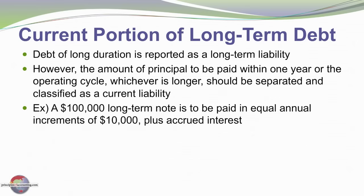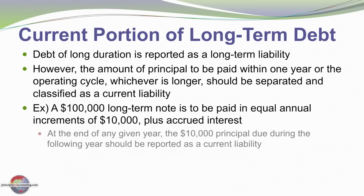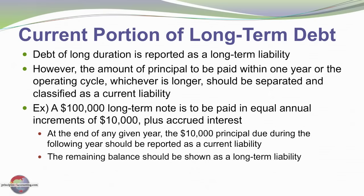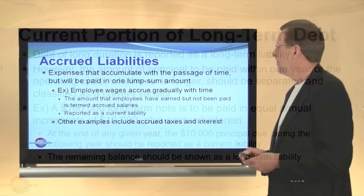Here's an example: we have a $100,000 note that's to be paid in equal annual installments of $10,000 each plus accrued interest. At the end of any given year, $10,000 of the principal should be shown as a current liability and the remaining balance would be shown in the non-current liability section.